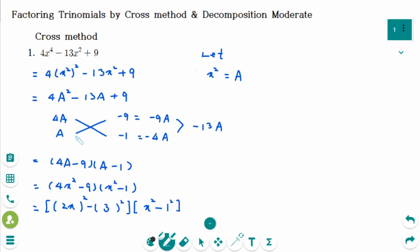The final factored form is 2x plus 3, 2x minus 3, and then x plus 1 and x minus 1.